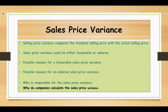Why do companies calculate the sales price variance? First, to decide the right selling price. In general, companies calculate variances to take corrective action. By calculating the sales price variance, companies can control their costs in order to achieve the target profit — they set a selling price and control costs accordingly.